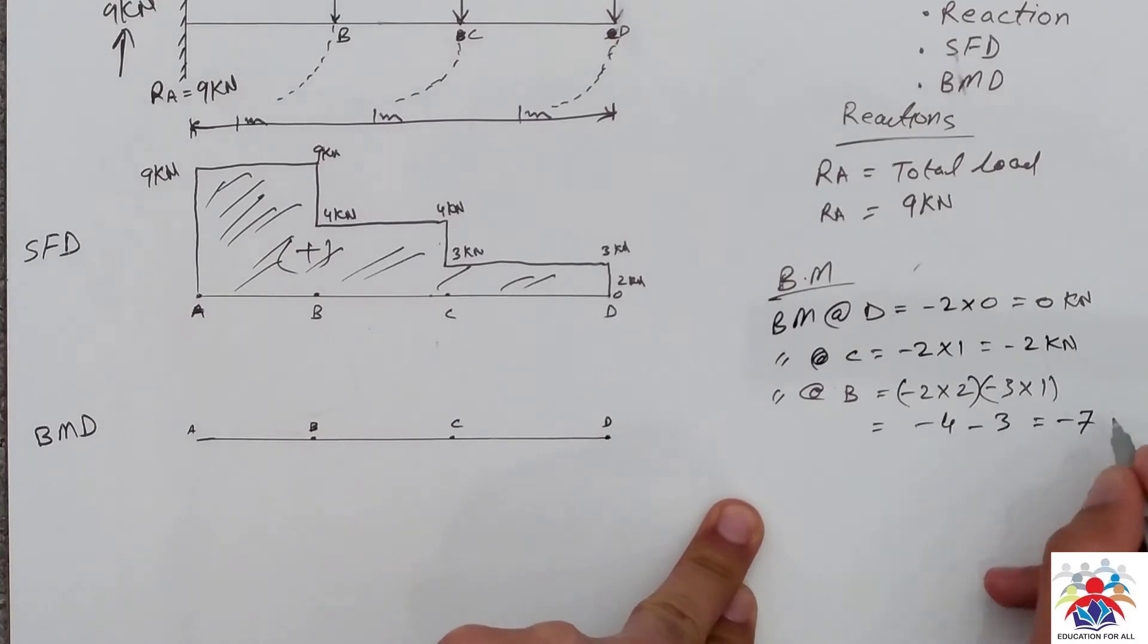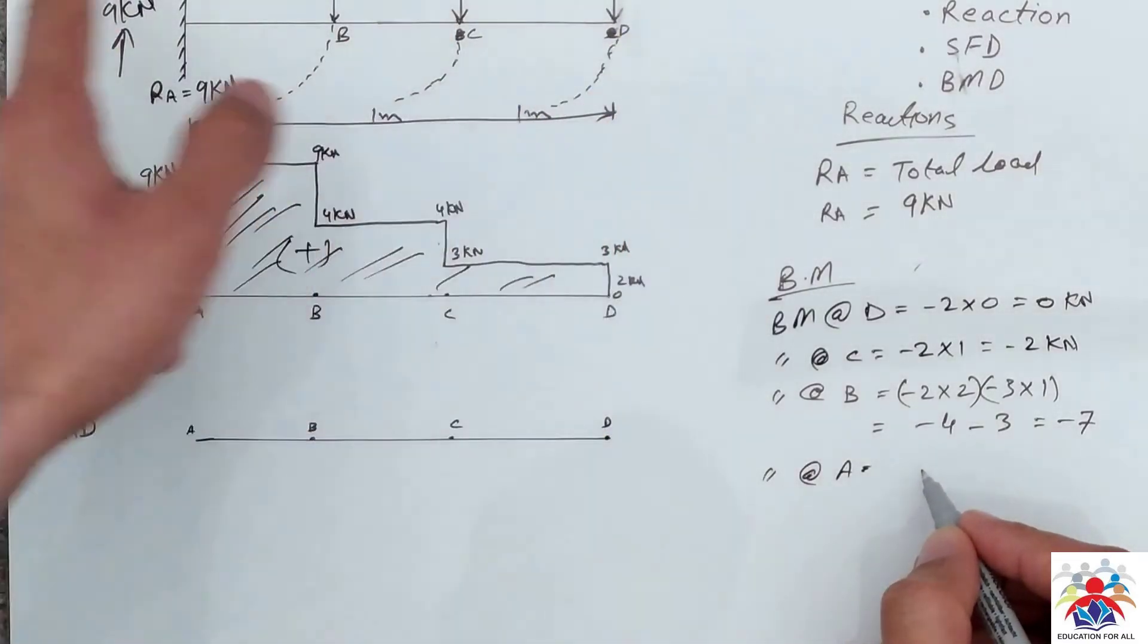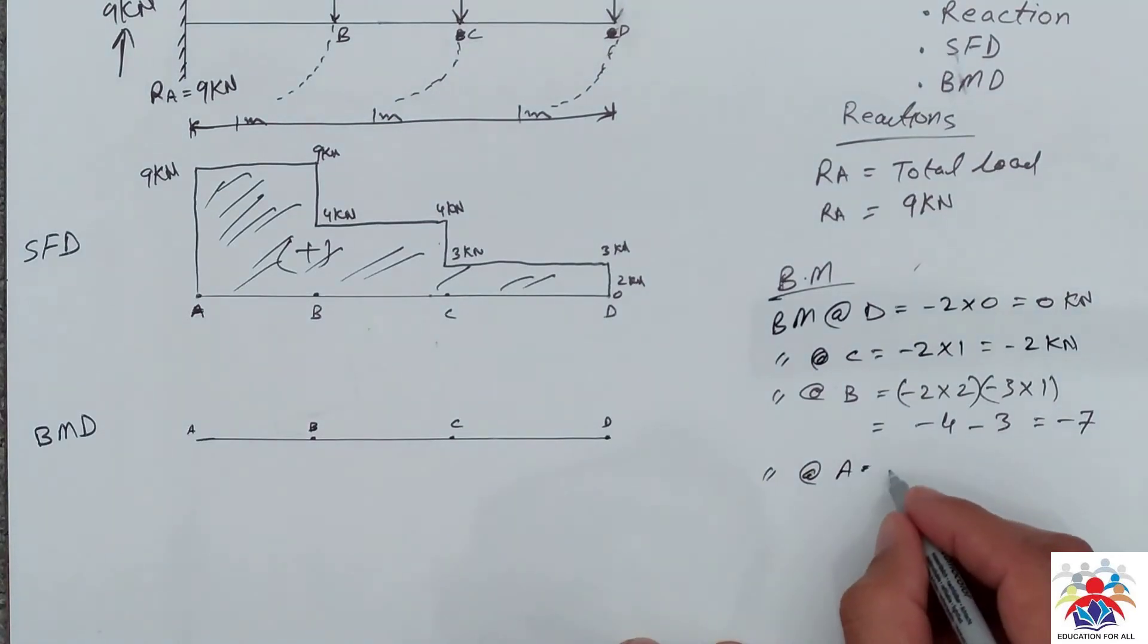Bending moment at point A will be from start to end, from D to A. So it'll be minus 2 multiply by 3, minus 3 multiply by 2: